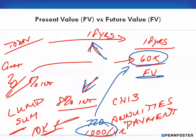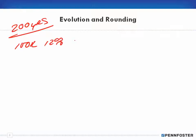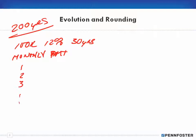I mentioned time and interest twice. Let's talk about evolution and rounding. Many years ago — say 200 years ago — if you wanted to take out a mortgage for a hundred thousand dollars at 12% interest for 30 years and wanted to know the monthly payment, somebody would have to perform all the calculations 360 times, then do it a second time to verify, and possibly a third time if they didn't match.